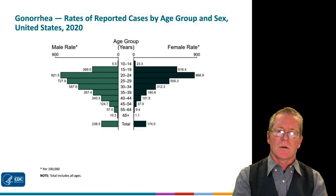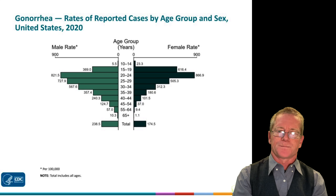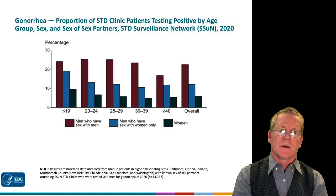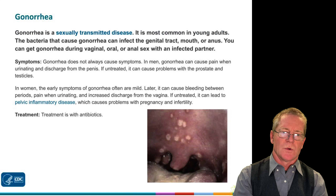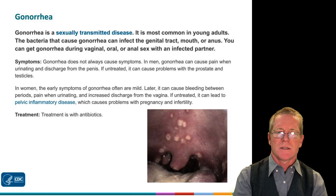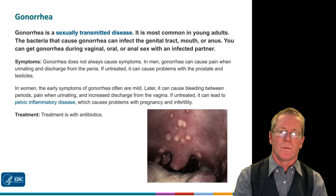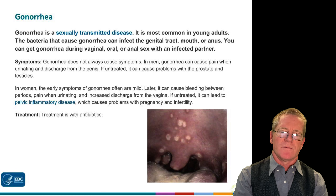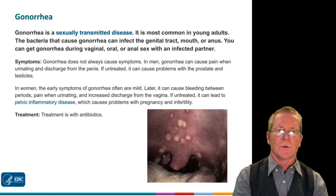Gonorrhea incidence is also highest in the 20-to-24 age group. It is most common in men who have sex with men but is also seen at high rates in men who have sex with women. Gonorrhea causes sores in the genital tract, mouth, or anus. Symptoms can be quite mild, particularly in women, but can later cause bleeding between periods, pain when urinating, and can lead to pelvic inflammation if left untreated, which can result in infertility. Treatment is with antibiotics, and previous sexual partners should be notified.